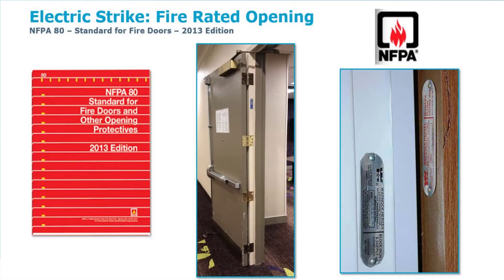The next part I really want to get into is fire rated openings, and what plays a major role when we're looking at putting an electric strike on an opening. It's important to understand what we're actually looking for and to understand the code series that goes in conjunction with where we're working. Every city, state, and jurisdiction is going to have an adopted code — normally an International Building Code standard such as IBC 2012, 2015, or 2018.